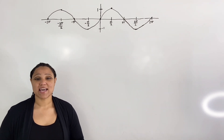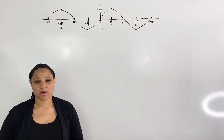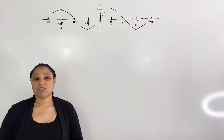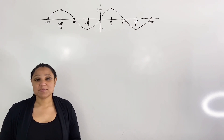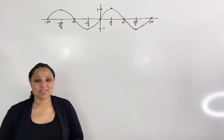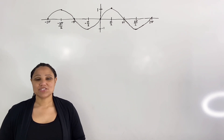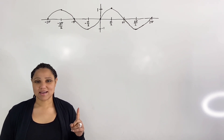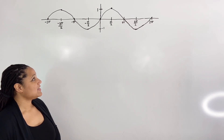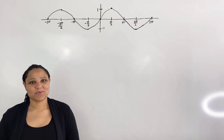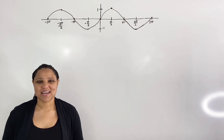However, for a function to have an inverse it must be one-to-one. In other words, the graph must pass the horizontal line test — any horizontal line should only intersect the graph one time. Clearly, the sine function is not one-to-one; it fails the horizontal line test.